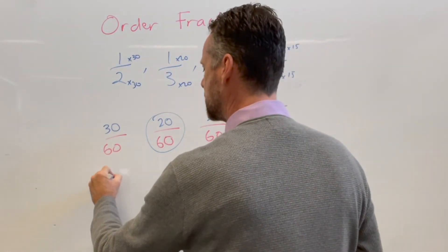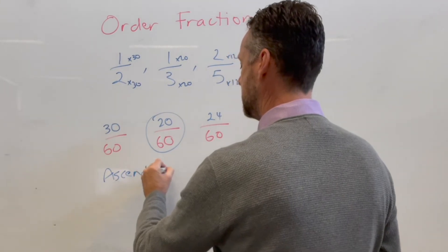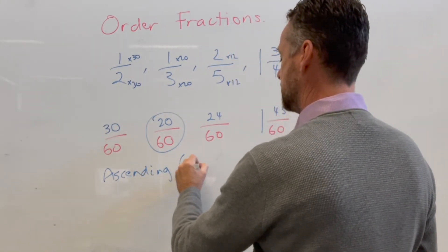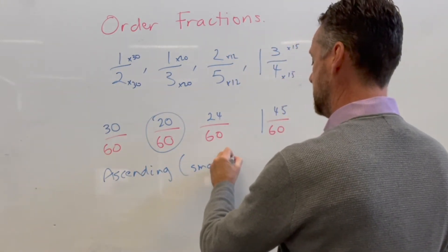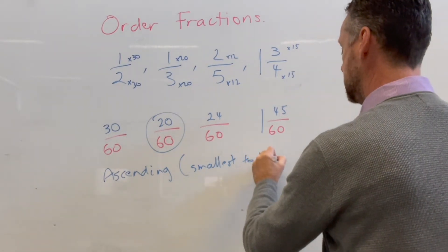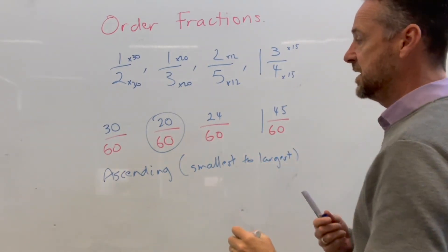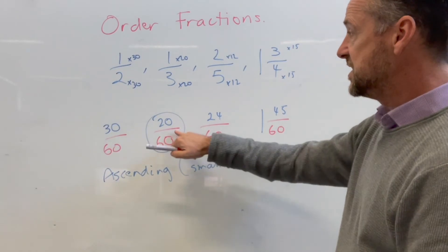So let's assume that the question is asking us for ascending, which is smallest to largest. And so we would go the smallest is here, so it's one third.